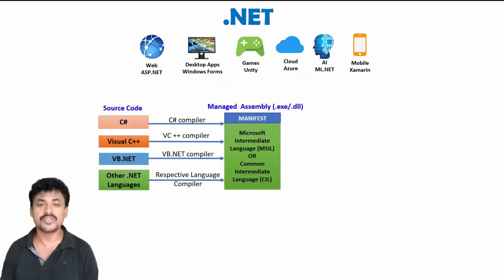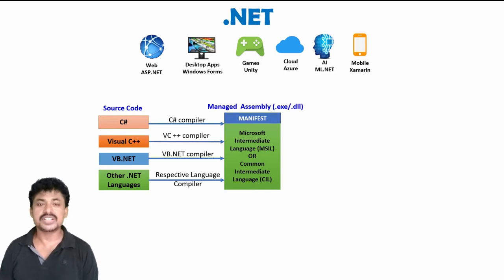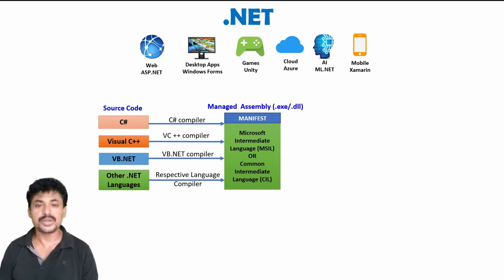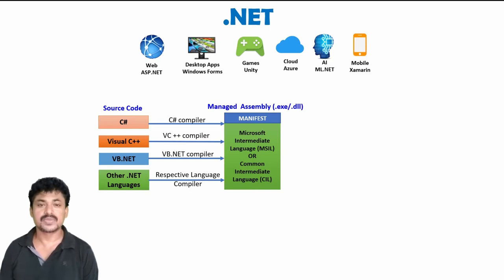Out of those 60 plus languages, 11 languages are presented by Microsoft itself. C# is the modern language especially designed for .NET. Every language needs some compiler to convert source code into machine code. If you write a program in C#, the C# compiler converts that source code into managed assembly.